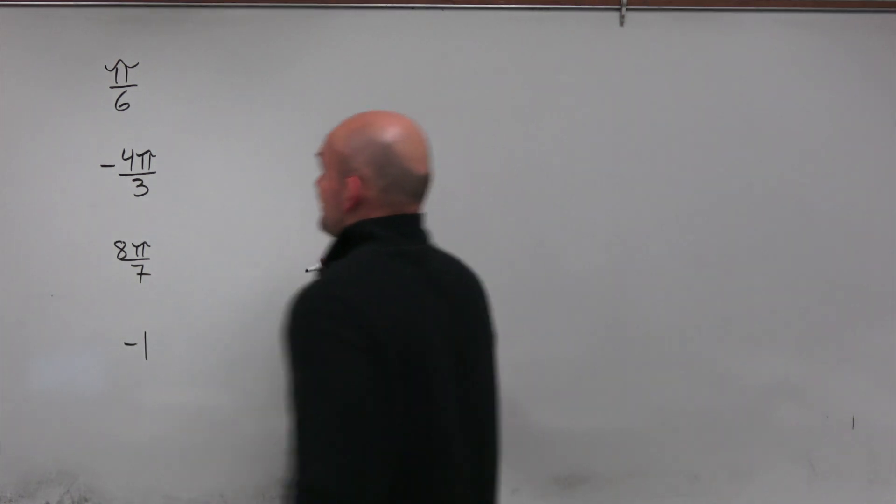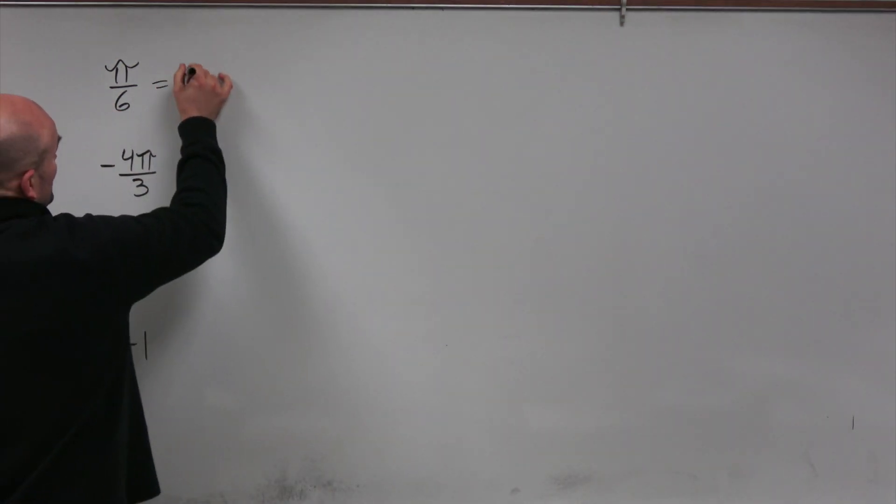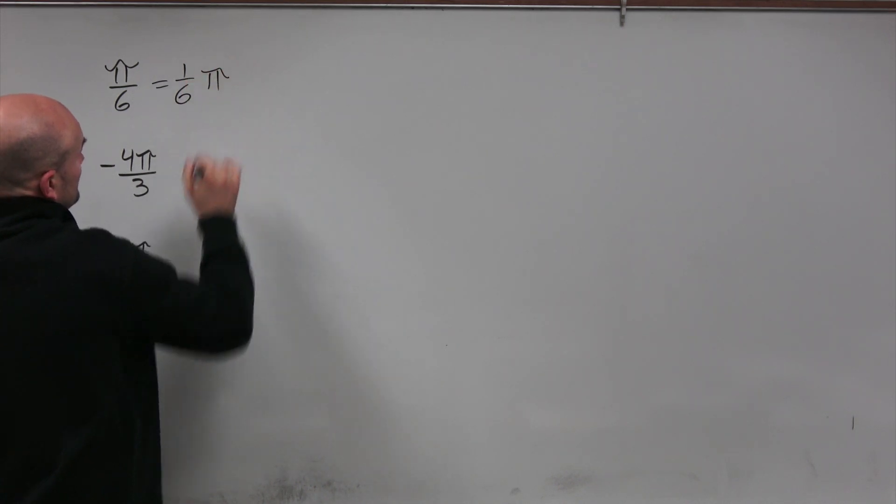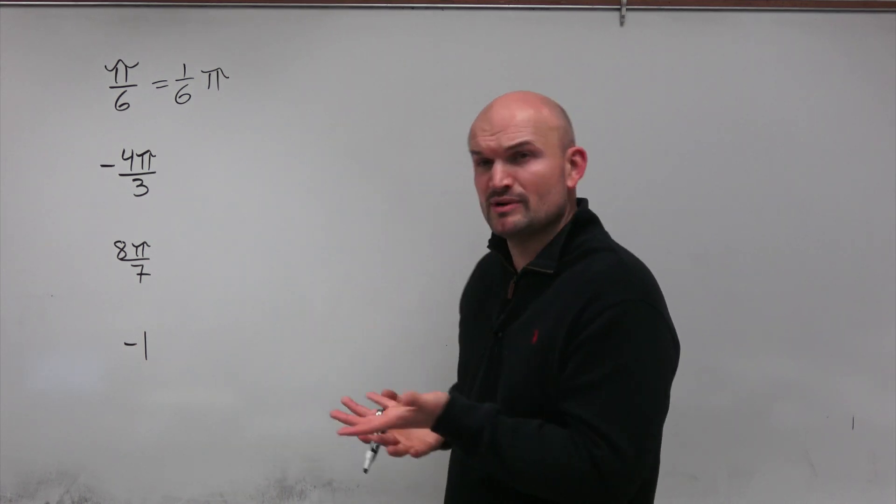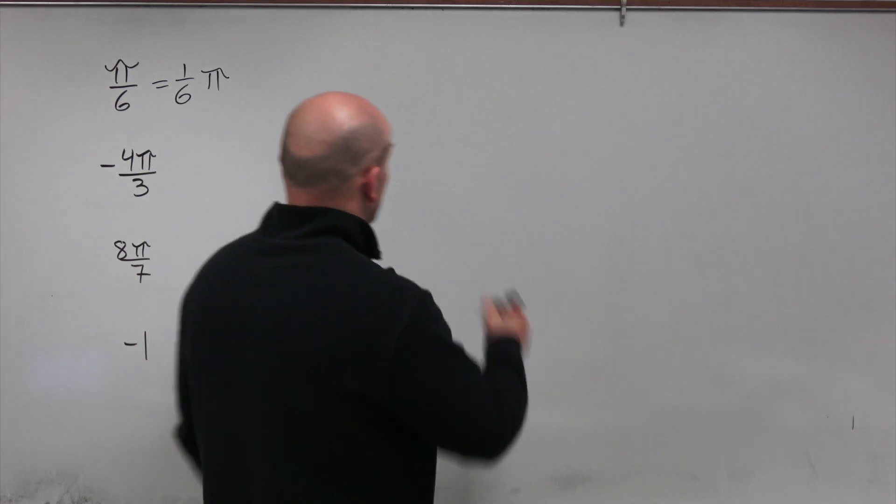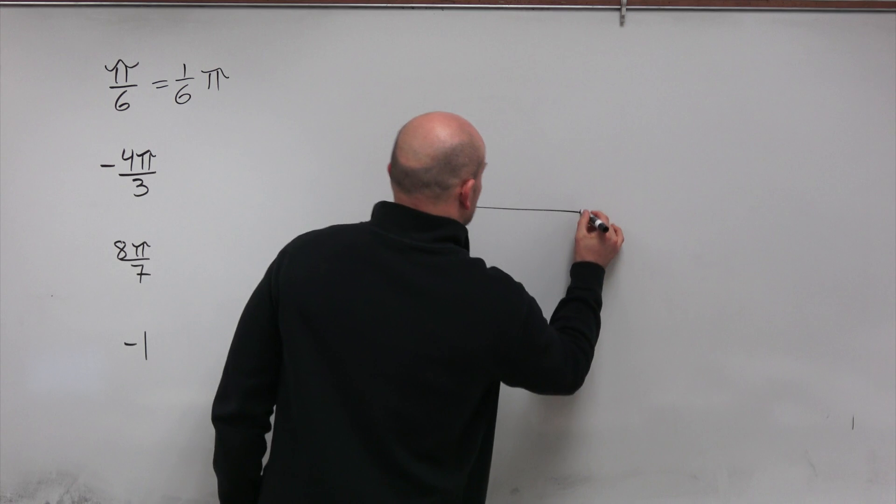So first one is going to be pi divided by 6. Now, it might be easier to understand this as 1 sixth times pi, right? So pi over 6 is our kind of common standard form. But just remember, you can rewrite that as 1 sixth of pi.